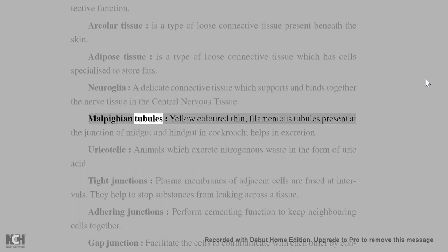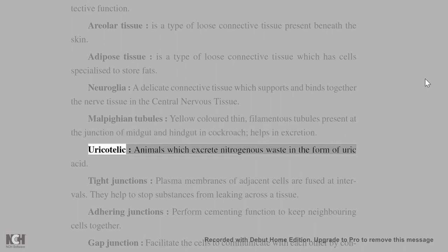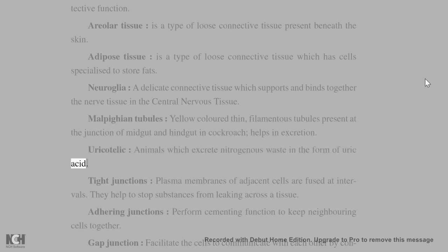Malpighian tubules: yellow-colored, thin, filamentous tubules present at the junction of midgut and hindgut in cockroach; help in excretion. Uricotelic animals excrete nitrogenous waste in the form of uric acid.